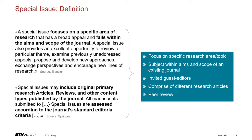Based on Springer's definition, special issues may include original primary research articles, reviews, and other content types published by the journal, which are subject to peer review procedures to ensure their scientific quality. The last point is usually only given if the parent journal has also implemented a peer review procedure for content quality assessment at the article level.